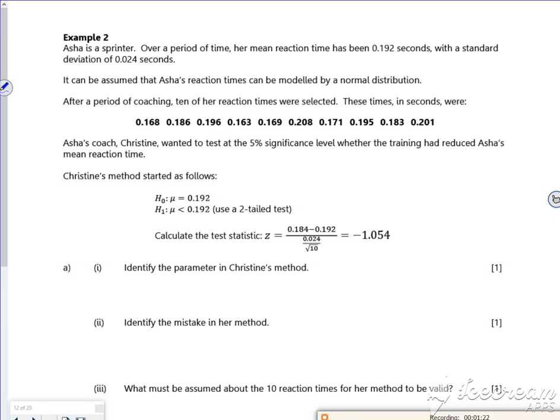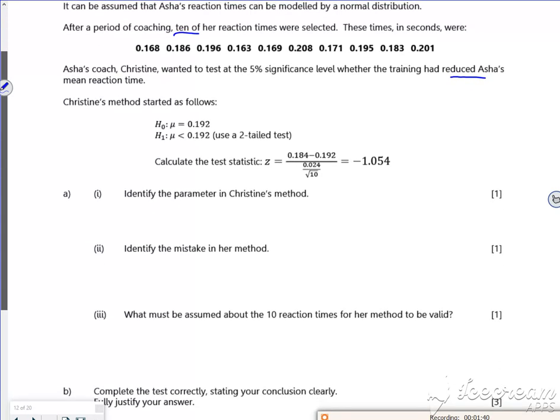So it says we're a splinter. It's 0.192 as a mean. Got a standard deviation of 0.024. Model, so we've got 10. And we want to see if it's reduced the times. So if you look, you ask for, identify the parameter. So the parameter is mu, it's 0.192.